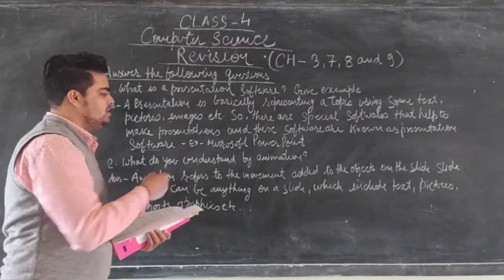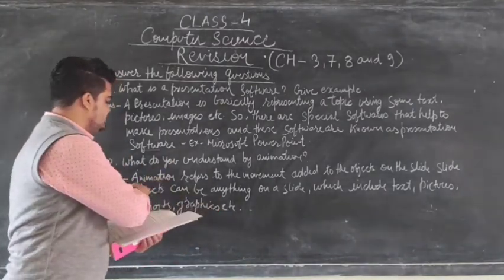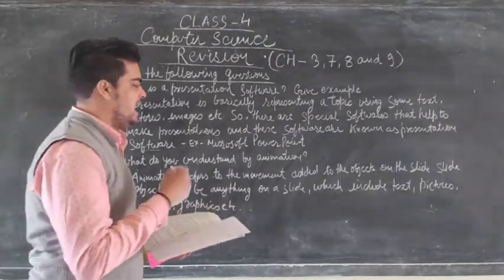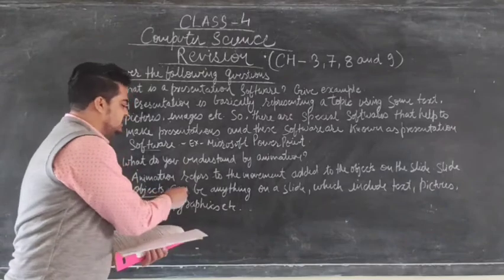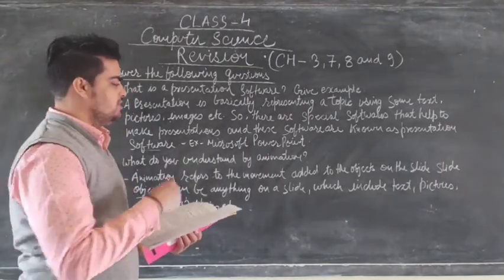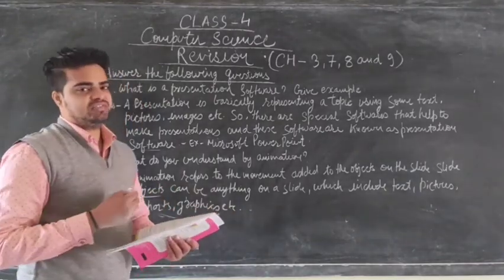Now question 2, what do you understand by animation? So answer to this question is, animation refers to the movement added to the object on a slide. So slide objects can be anything on a slide, which includes the text, pictures, charts, graphics, etc.